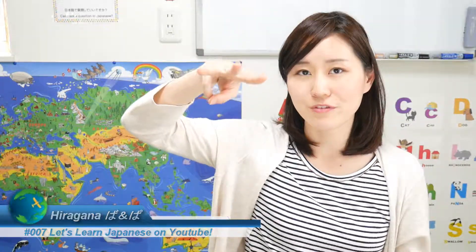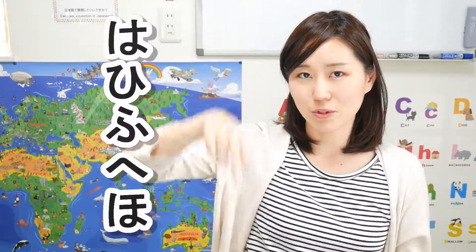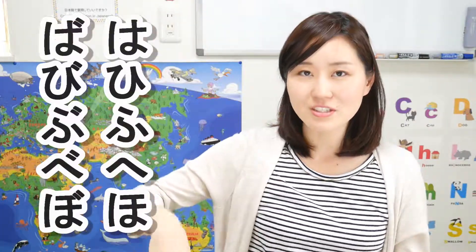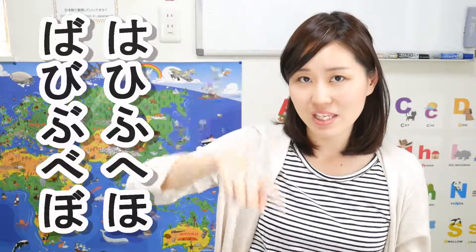So it sounds like this: pa, pi, pu, pe, po. Just remember that ha, hi, fu, he, ho has basically three versions: the normal version, the B version, and the P version.